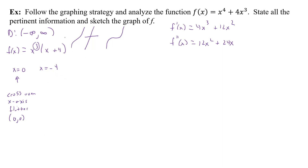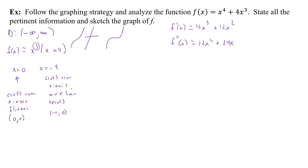At x = -4, the factor has power one, so it's more linear as it crosses the x-axis. The crossing point is (-4, 0). So the graph crosses at both (0, 0) and (-4, 0), giving us a sense of where f(x) intersects the x-axis.